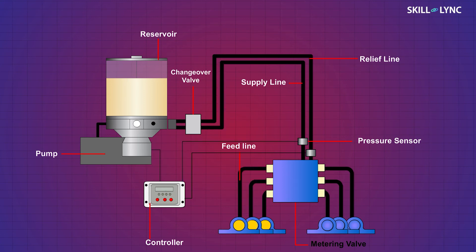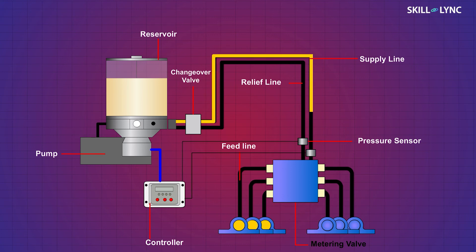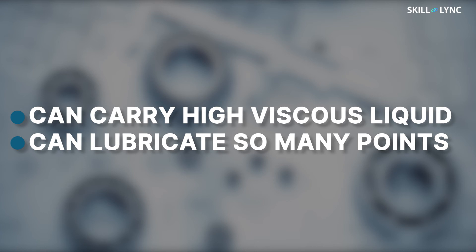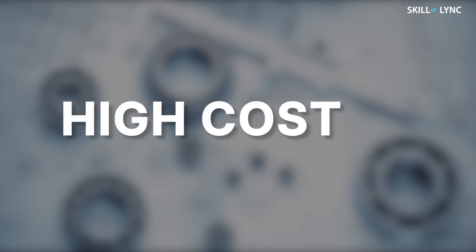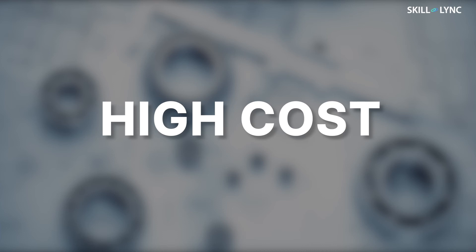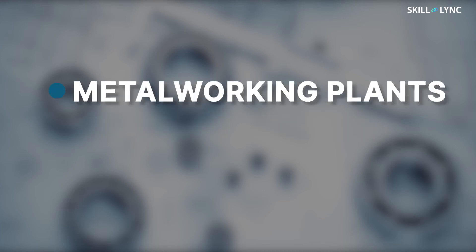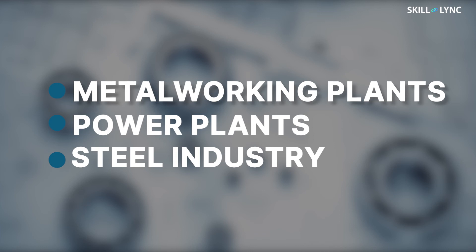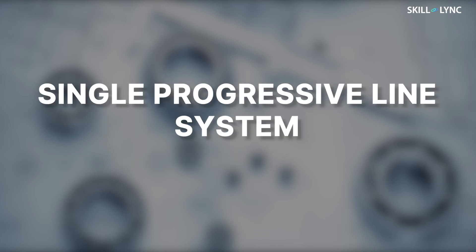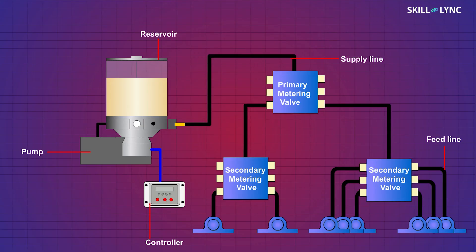After sufficient pressure is attained in the supply line, the controller shuts off the pump and sends a signal to the changeover valve, which switches the supply. The next time the controller switches on the pump, the lubricant enters through the second line and now the first line acts as a vent. The remaining points get lubricated, and this cycle continues. This system can carry high-viscous liquids and can lubricate many points, but the cost is comparatively high. It is used in metalworking plants, power plants, and the steel industry.